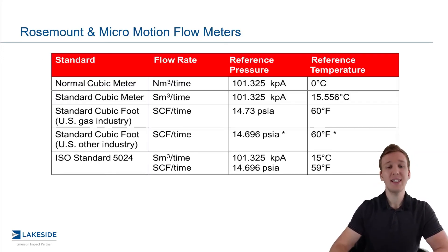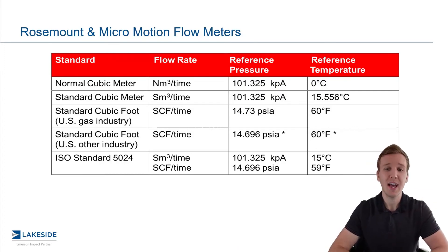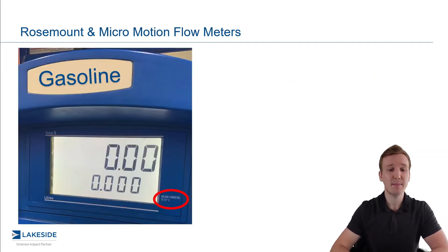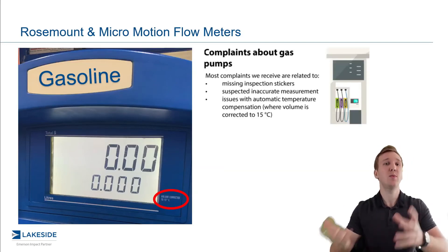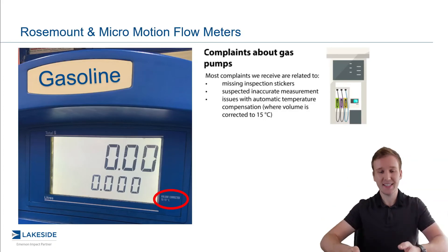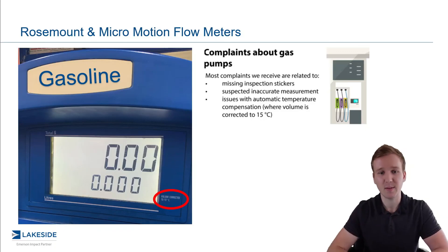There are different standards based on the industry you're in. We most commonly hear of normal cubic meters or standard cubic meters. As you can see in this reference table, the difference is what temperature we are referencing back to. If you go to fill up gas at the pumps, you're going to see volume corrected to 15 degrees Celsius. The reason we do this is to make sure we have a consistent set of conditions — so that when you buy gasoline you might not like the price, but at least it will be a consistent reference.